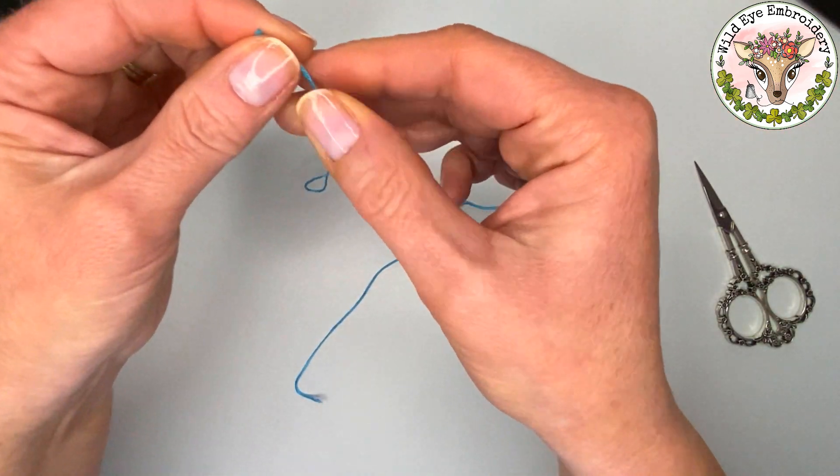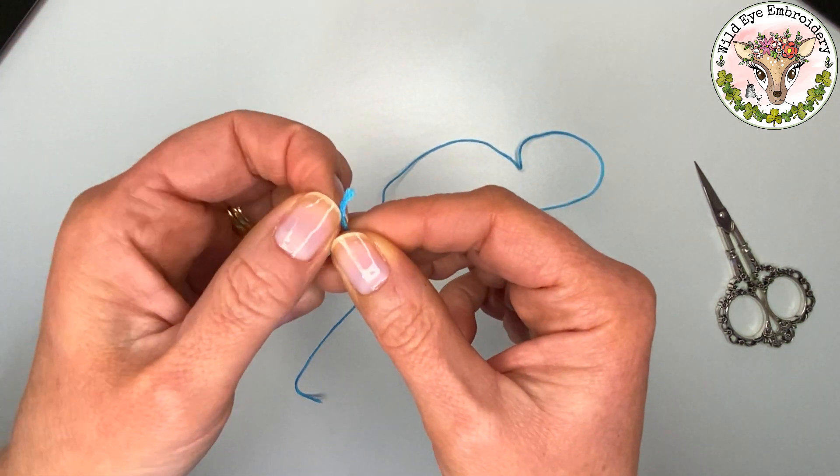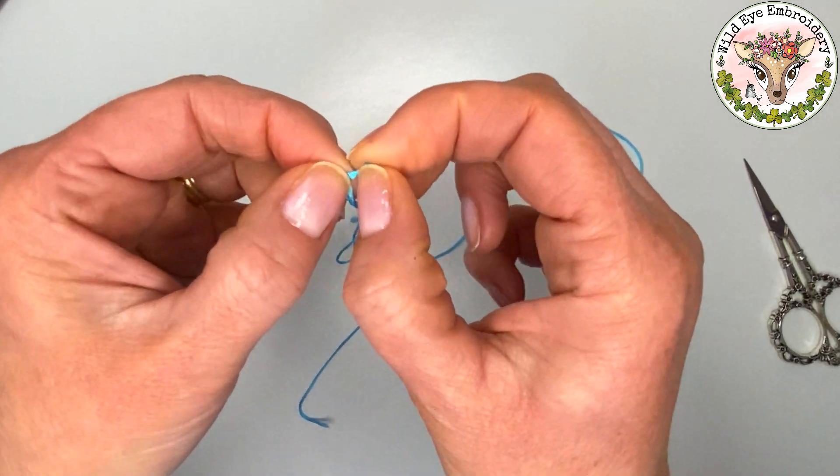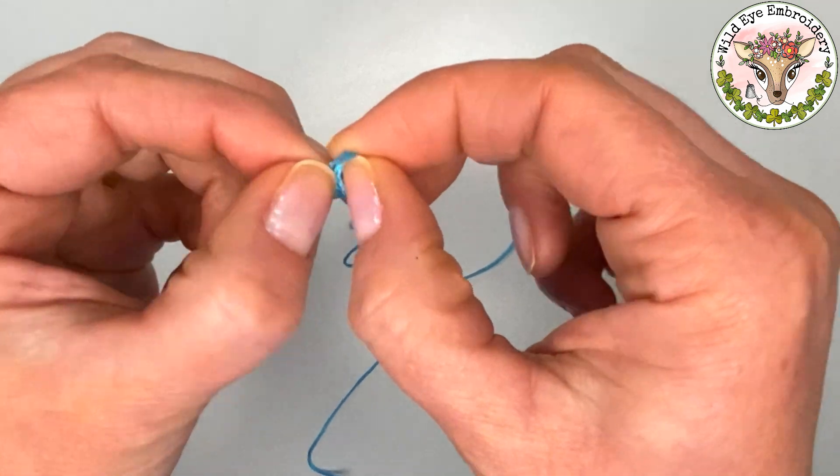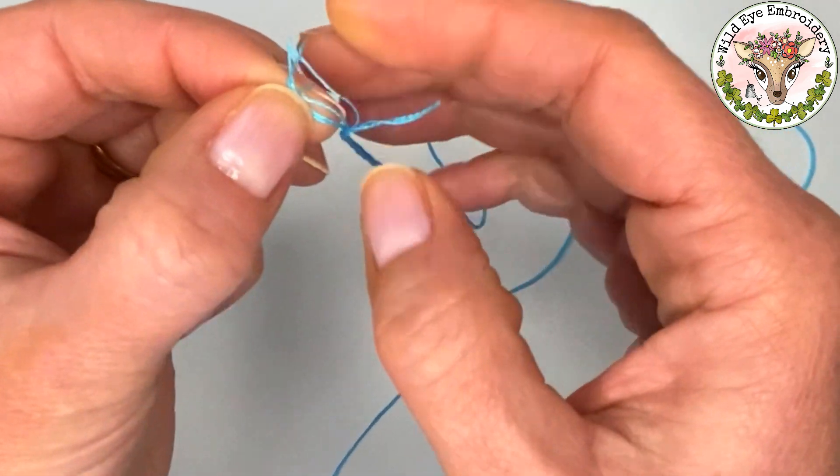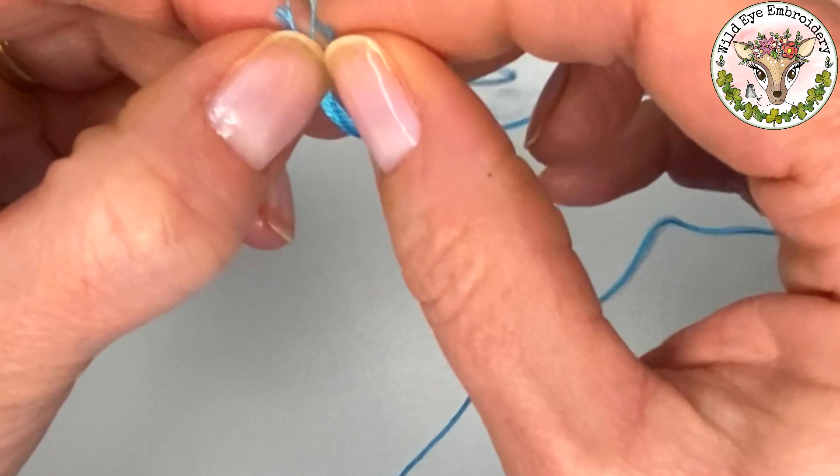Embroidery floss is actually made up of six individual strands which can be separated. Sometimes you will sew with six but this would be more for chunky patterns. Sometimes you'll do this for chunky flowers or woven wings for example.